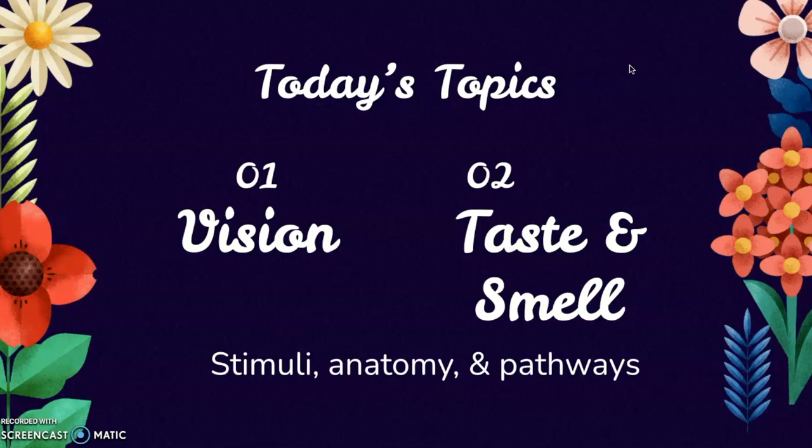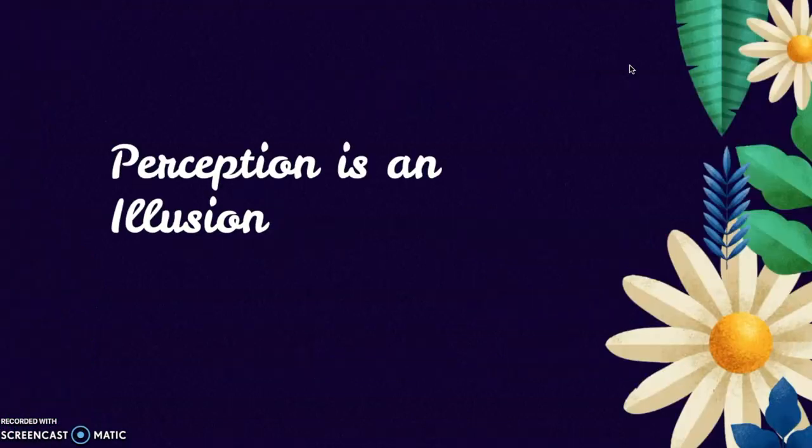Hopefully, you will also soon understand why I've titled this lecture, Perception is Not Reality. Perception is not a snapshot of reality. Instead, it is a subjective construction in your mind and brain that projects your own experiences, beliefs, expectations, and awareness onto objective reality. This is what I mean when I say that perception is an illusion.